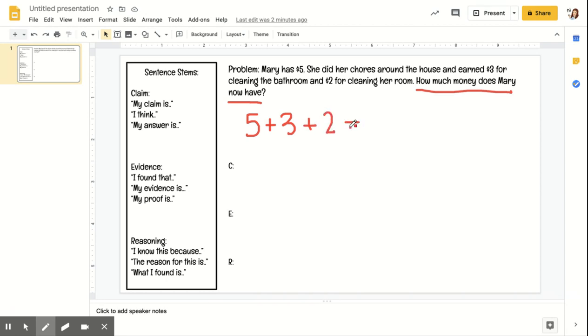And I know after I showed my work that I would get $10. So when we move to the claim, evidence, and reasoning, our CER, the first thing that we would do is our claim.